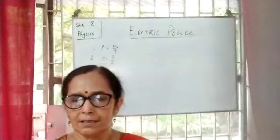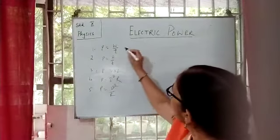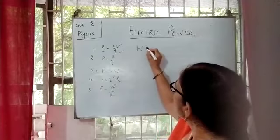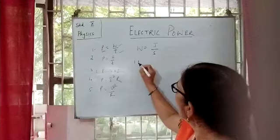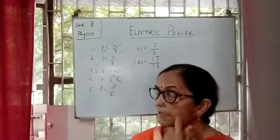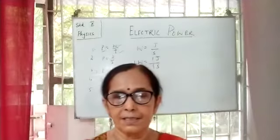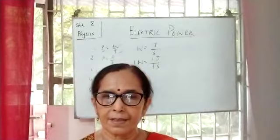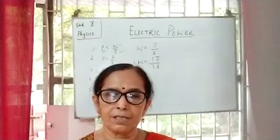Now students, what is 1 watt? If we see here, this power is watt, this is joule, this is time. Then watt is equal to joule by second. That is, 1 watt is equal to 1 joule per 1 second. So, 1 watt is the electric power consumed by an electric device carrying a current of 1 ampere against a potential difference of 1 volt.